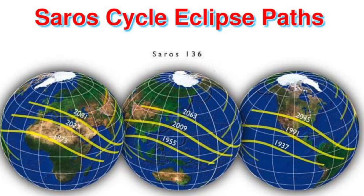And finally, the Saros cycle is an 18-year, 111.3-day period after which the earth, sun, and moon return to nearly the same relative positions, and the cycle of lunar and solar eclipses begins again.